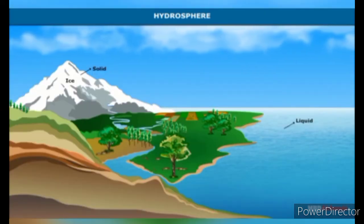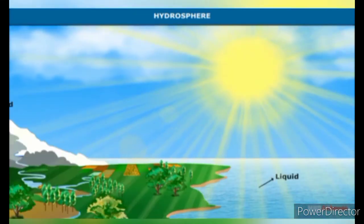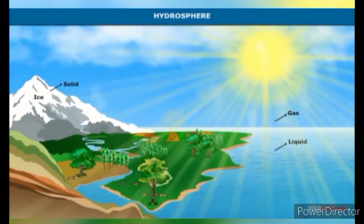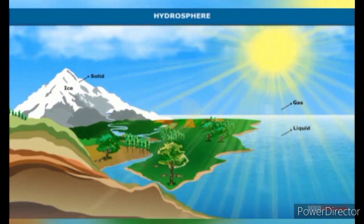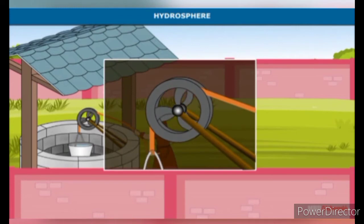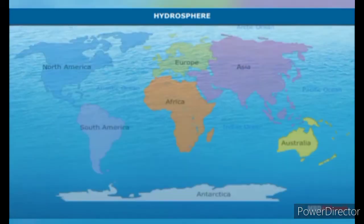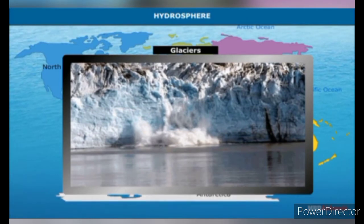Water changes its state — liquid, solid, or gaseous. In liquid form it exists in oceans, rivers, and lakes. Underground reservoirs also form a part of all living things. In its solid state, it exists as ice sheets or snow cover on mountain tops and as glaciers or ice sheets at the Arctic and Antarctic ice caps.